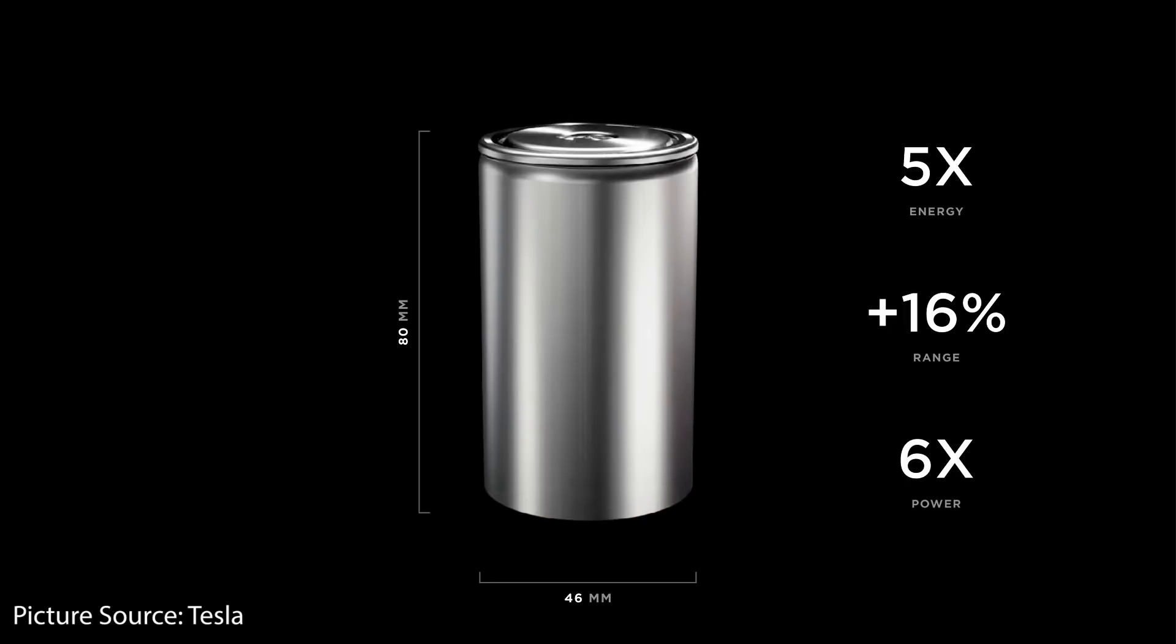You can manufacture the 4680 battery cell with an NCA chemistry, nickel cobalt aluminum, a nickel manganese based cell, or even iron phosphate based cell. The format itself does not determine what chemistry you can use.